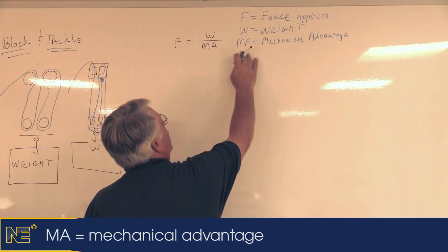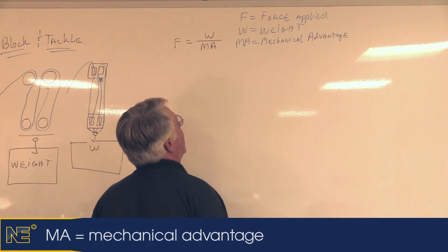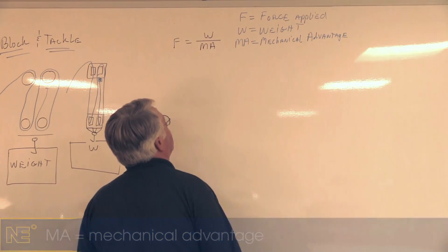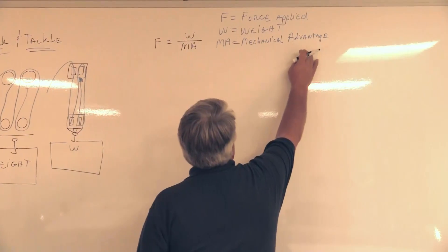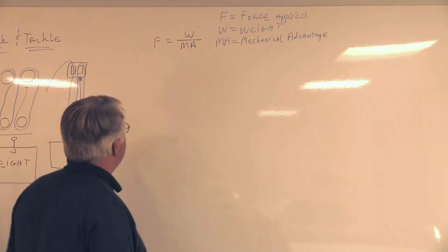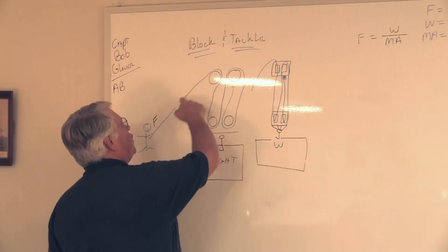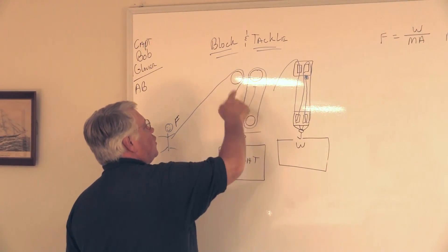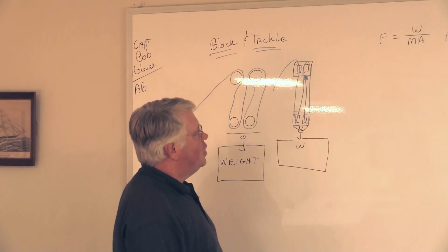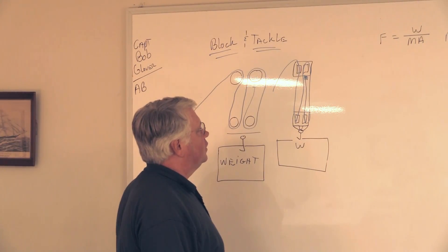We're going to divide that weight by what is known as the mechanical advantage. That's where the block and tackle come in - by roving this line through these shivs, we create what we call a purchase or a mechanical advantage.